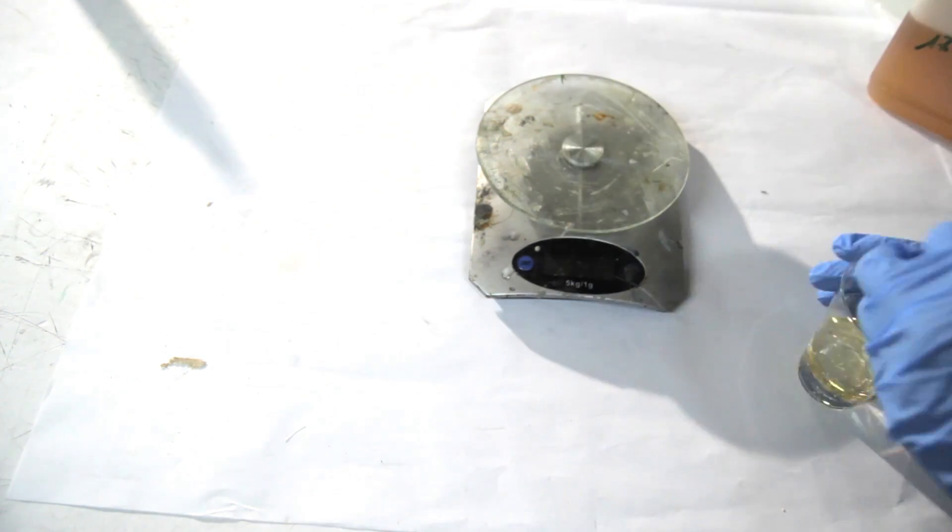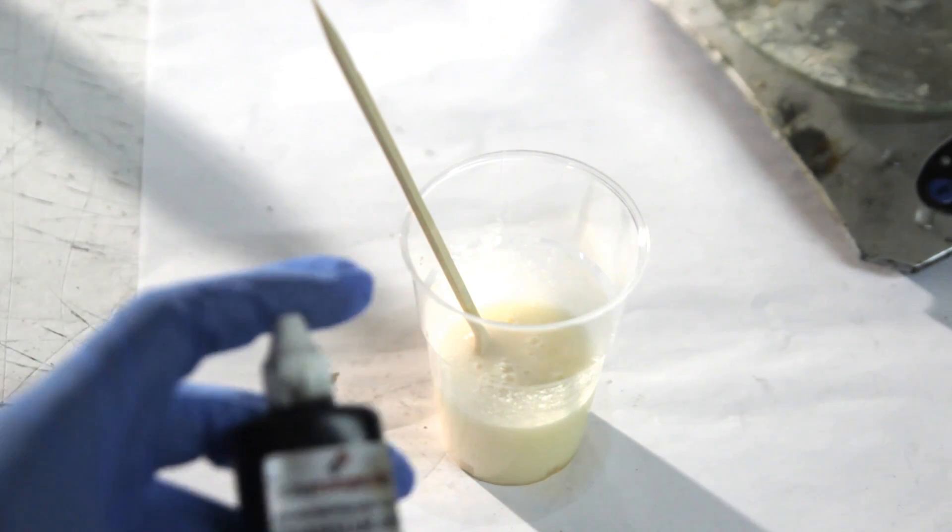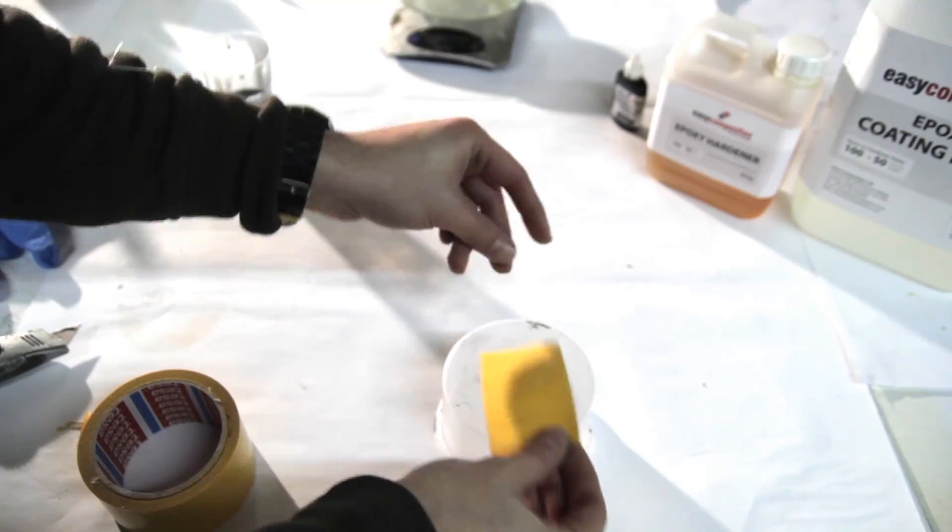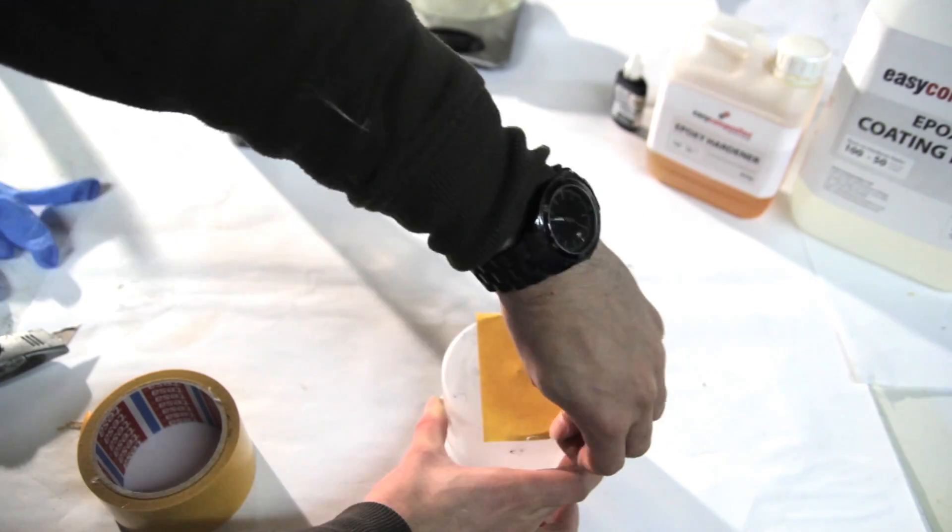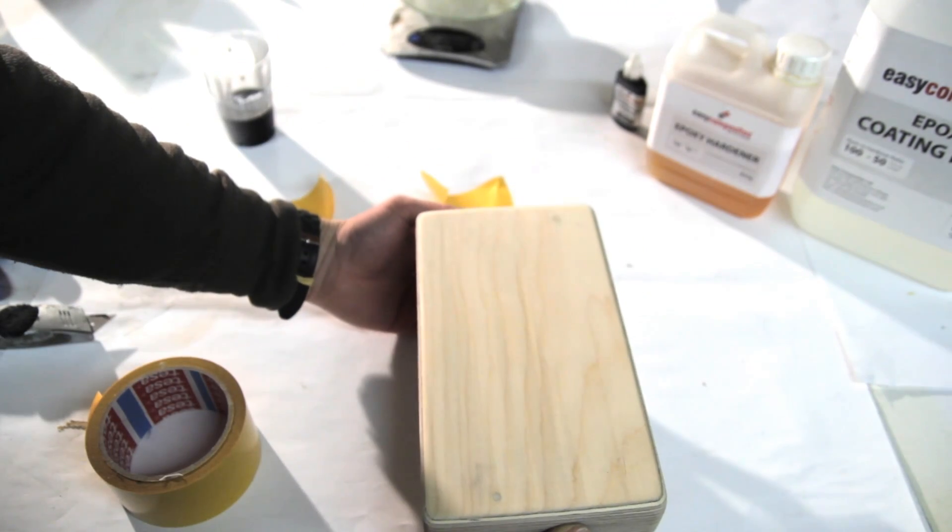So the thing I'm doing here is sealing the wood, and I'm using the epoxy coating resin. I'm just adding some black just to have a nice finish because I like it.